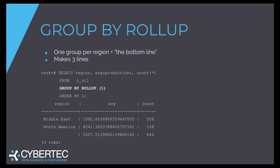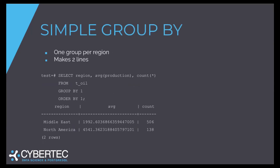If we run a simple Group by, we get one line per group. In this case, we get one line for the Middle East and one line for North America. We're using average, so we get average production and count(*). In our dataset, we have 506 rows for the Middle East and 138 rows for North America. That's basically what our dataset looks like.